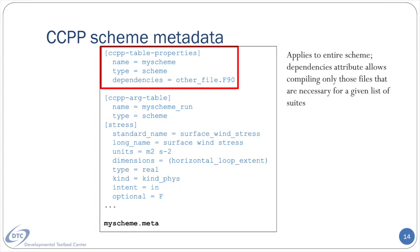There is a section called CCPP Table Properties that applies to the entire scheme, not just one subroutine within. It has fields for a scheme's name, the type — which should be scheme for all CCPP schemes — and a list of file dependencies to be used by the CCPP framework to inform the host application's build system. It is especially useful for compiling only those files that are necessary for a given list of suites, rather than all files within the CCPP.